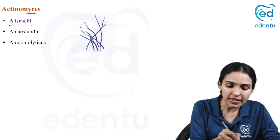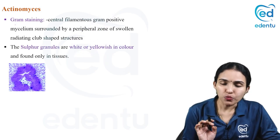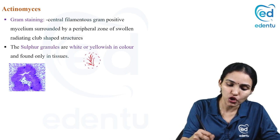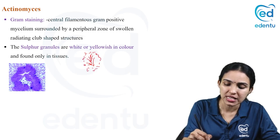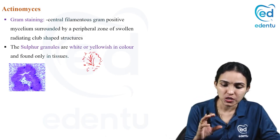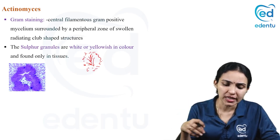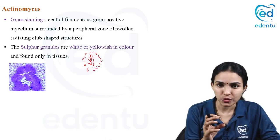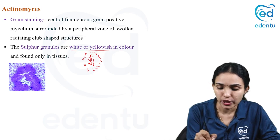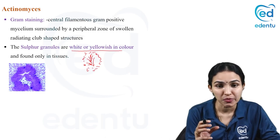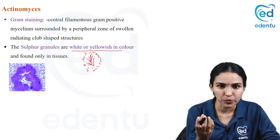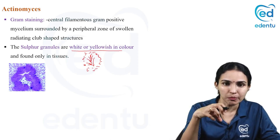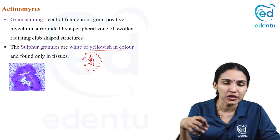On gram stain, actinomyces shows a central filamentous gram-positive mycelium with a peripheral zone of swollen radiating clubs, due to inflammatory cell exudate at the periphery. They form sulfur granules — yellowish-colored granules found only in tissues. Each granule is composed of a number of bacteria. On histopathological staining, the central mass of filamentous bacilli with peripheral radiating clubs gives a characteristic sun ray appearance.